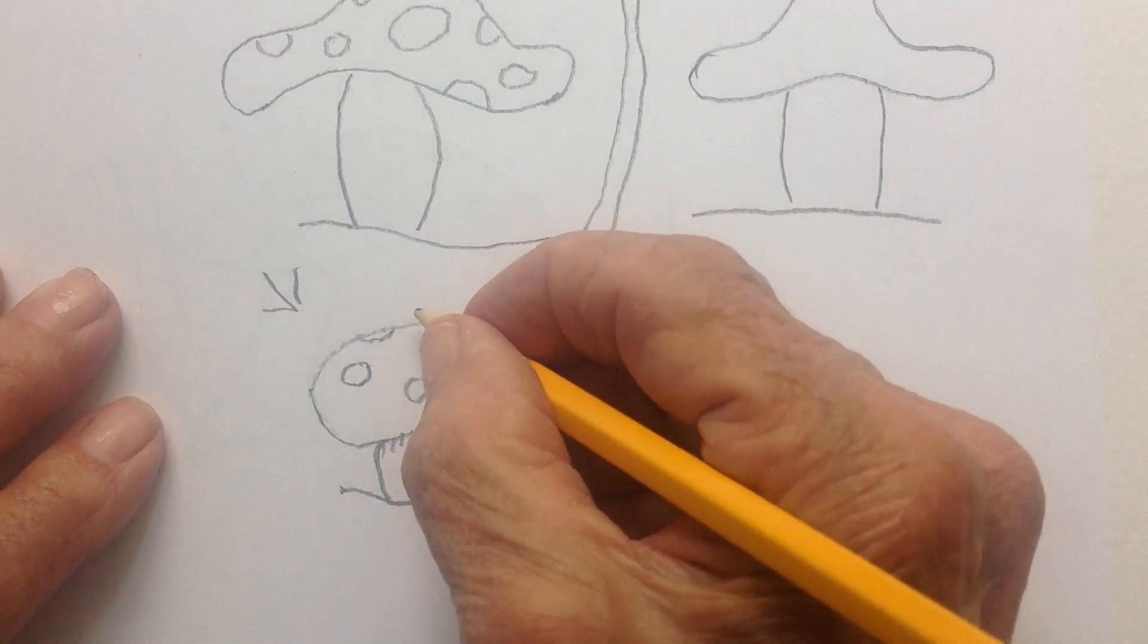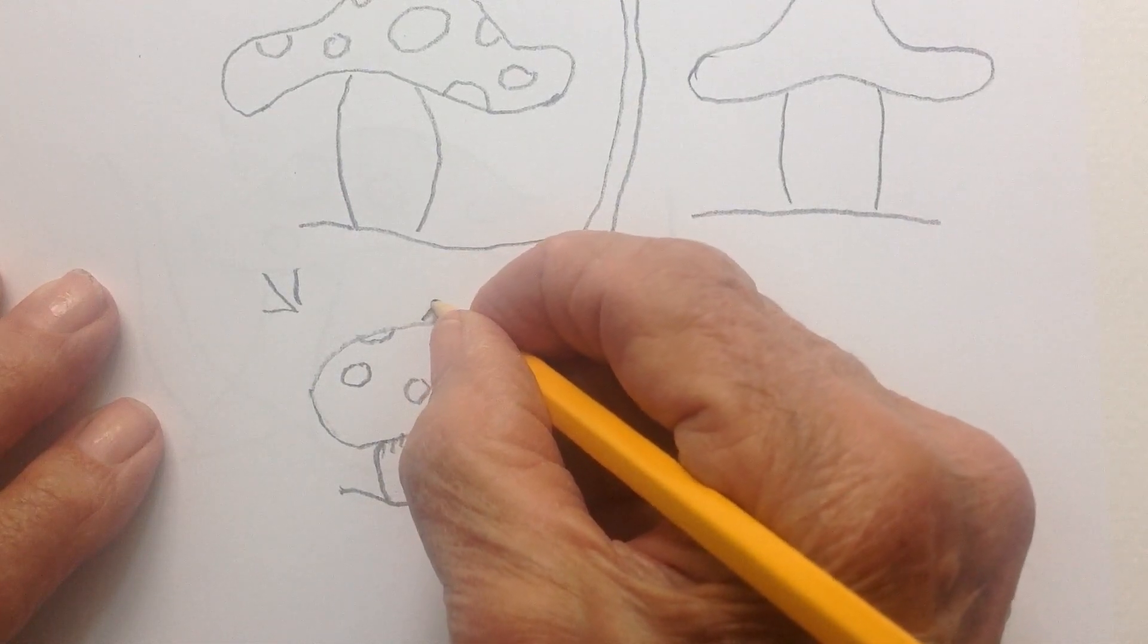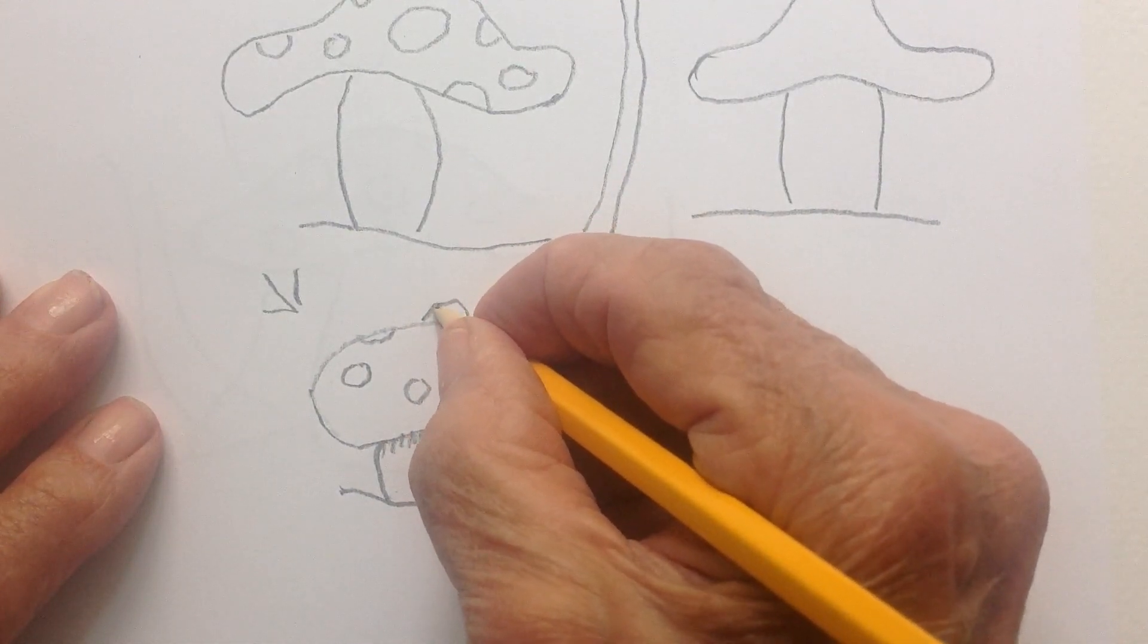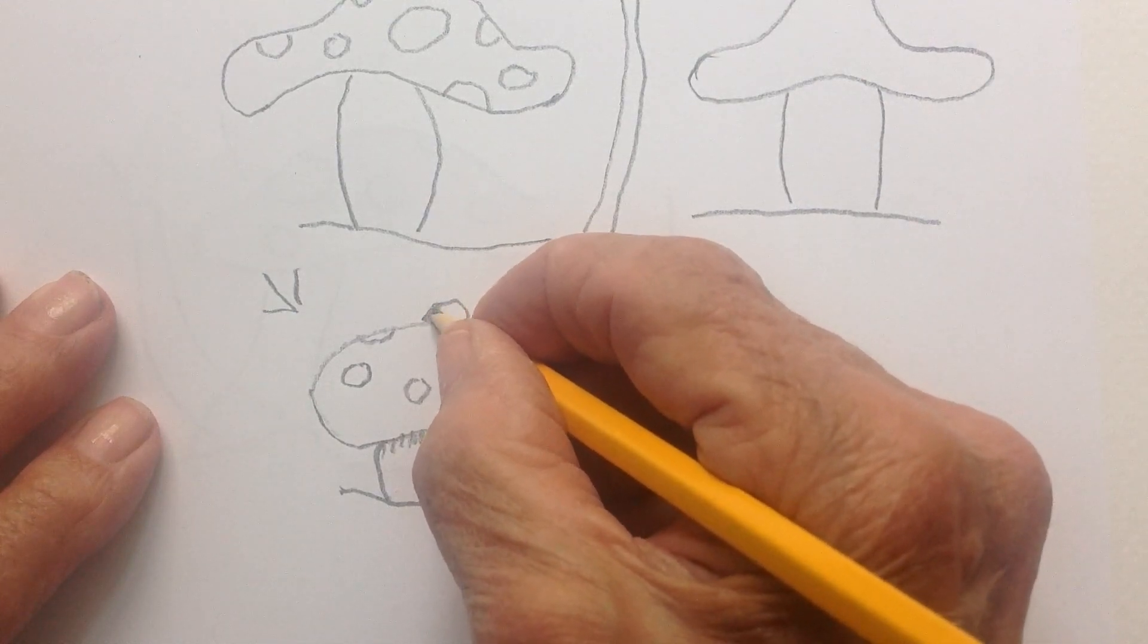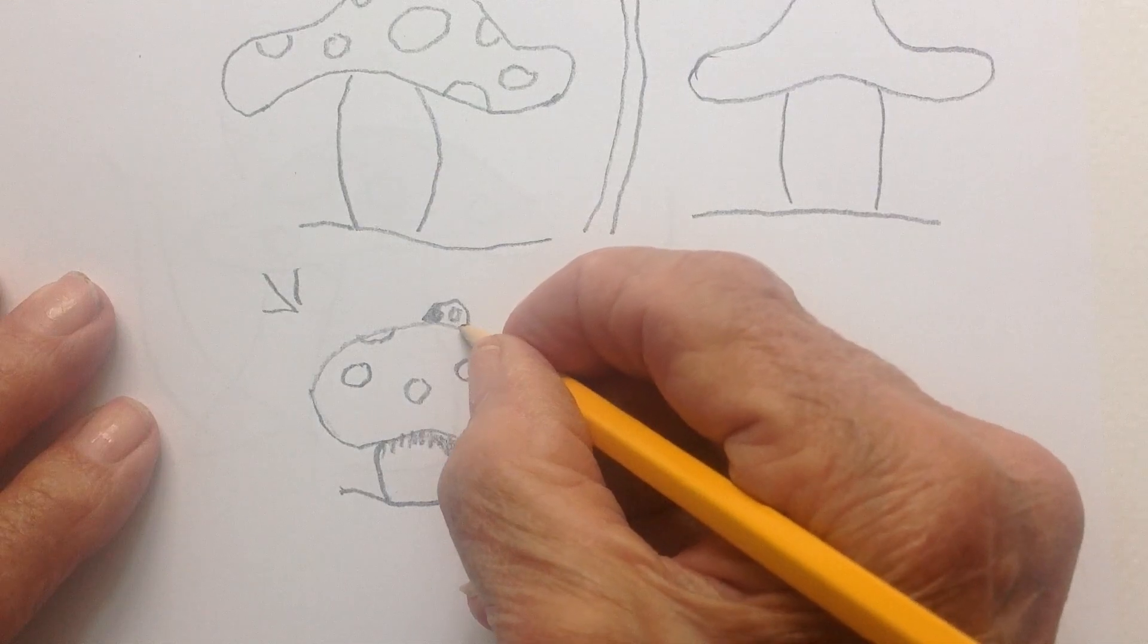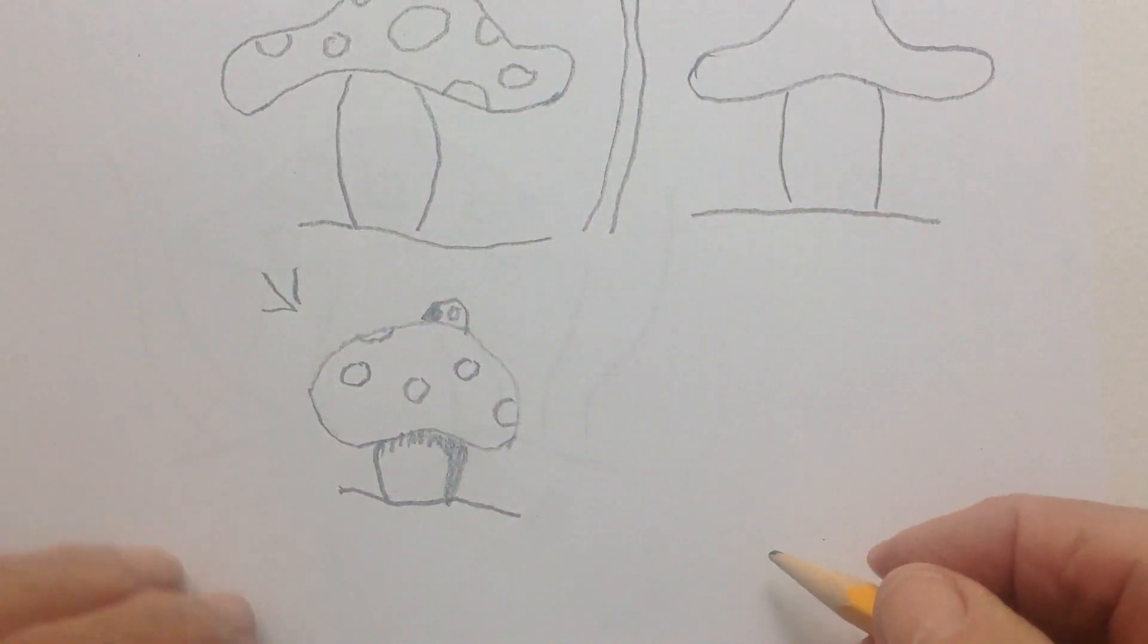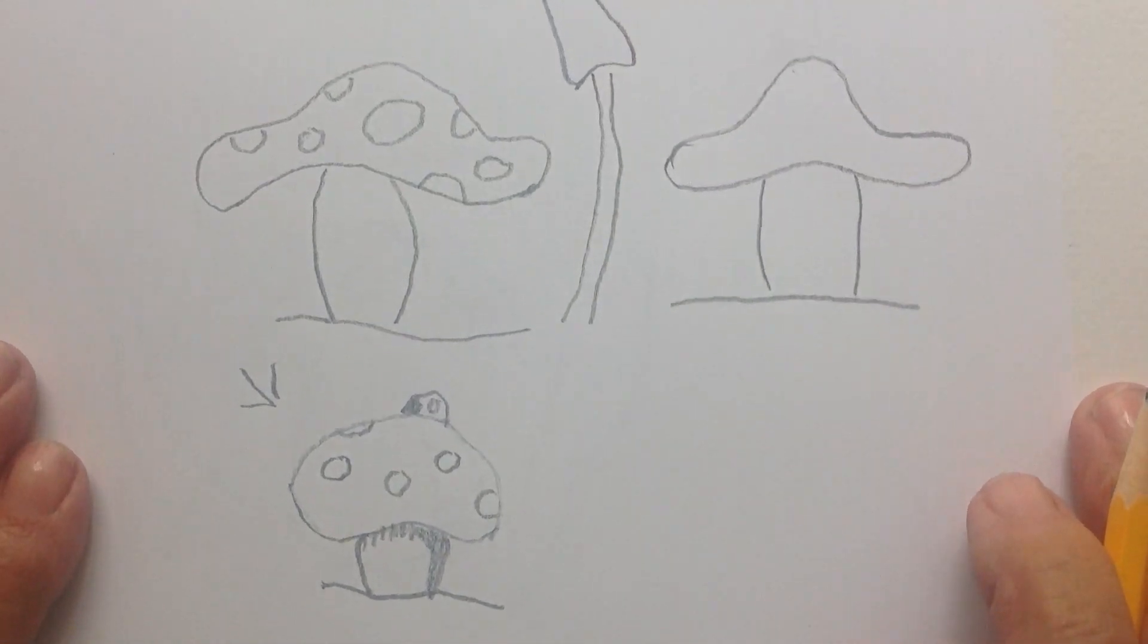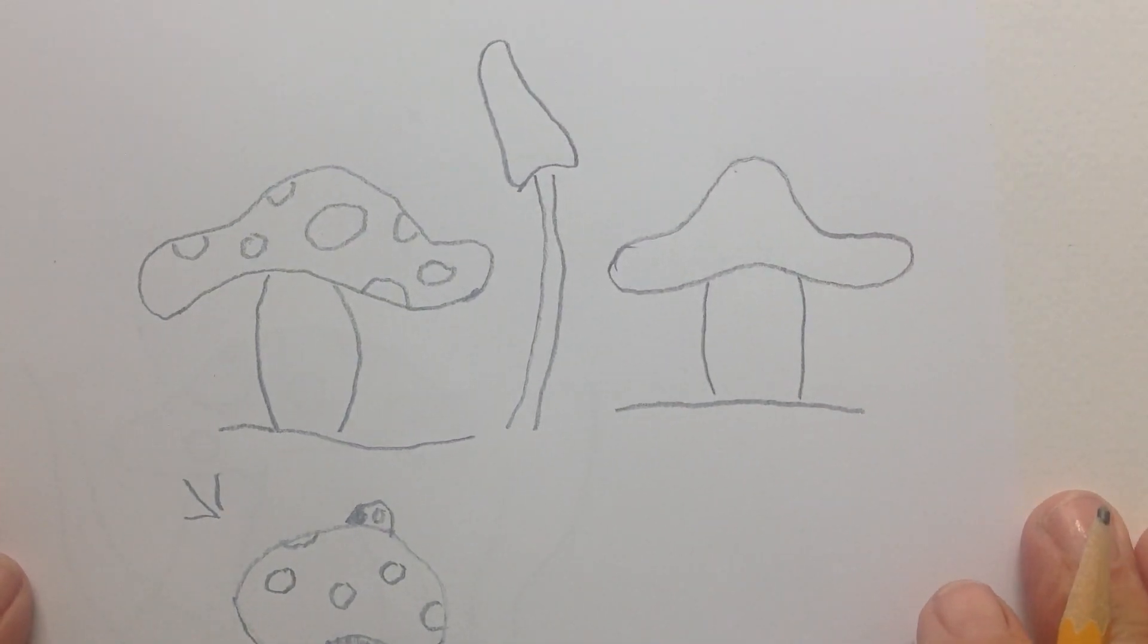Let's say there is a bug on the mushroom. Let's do a ladybug. She's got a black front. Two spots like that. She's like that. See how simple this is?